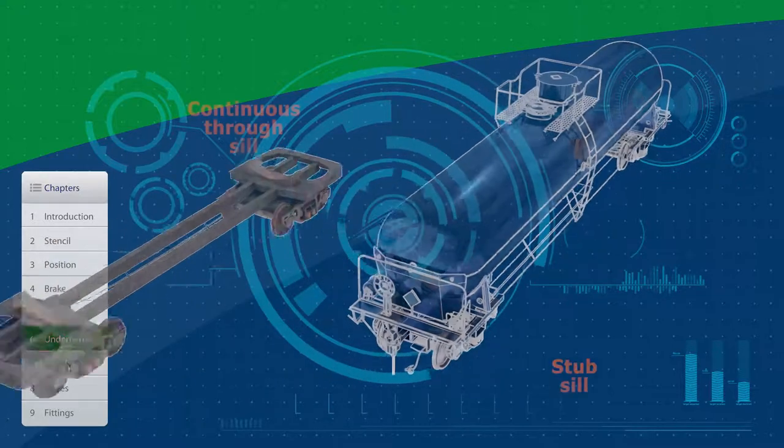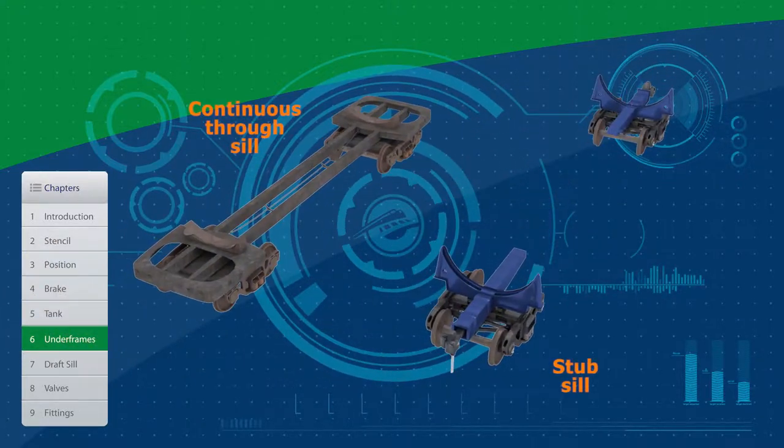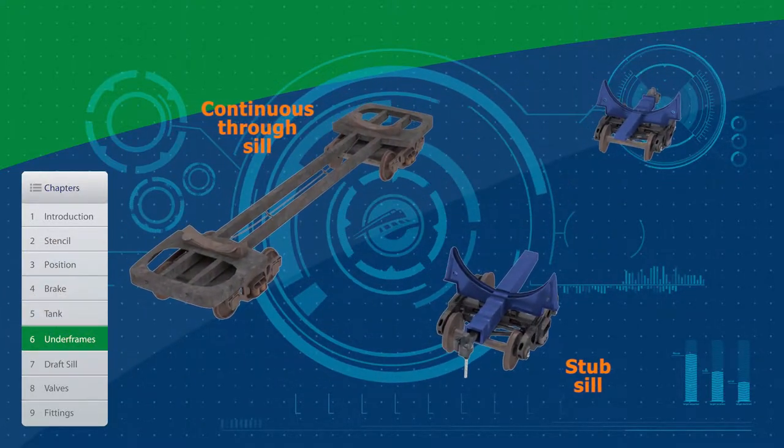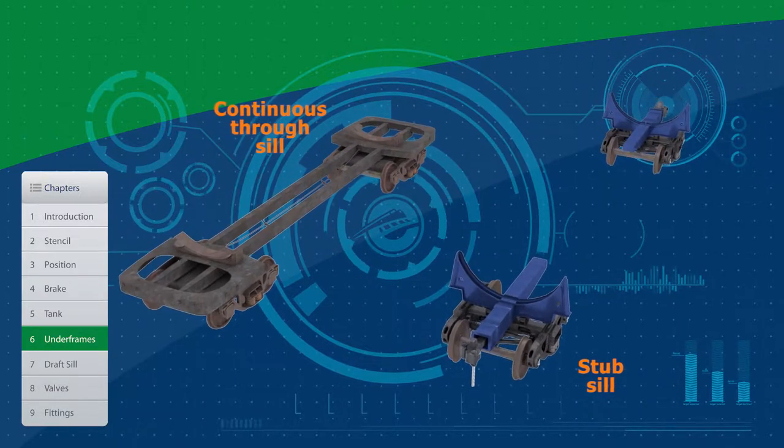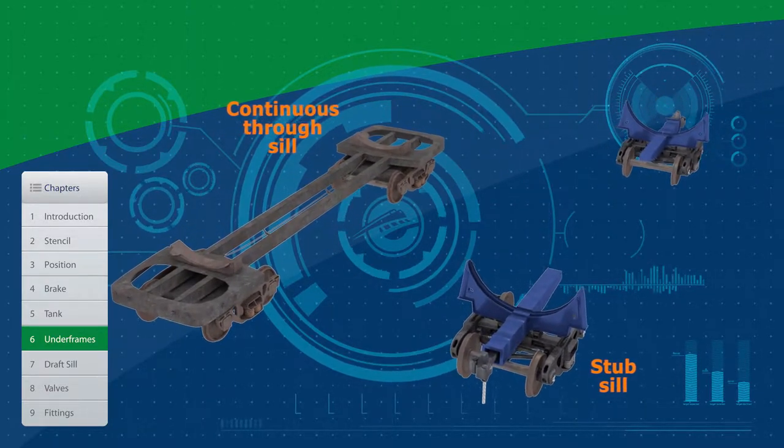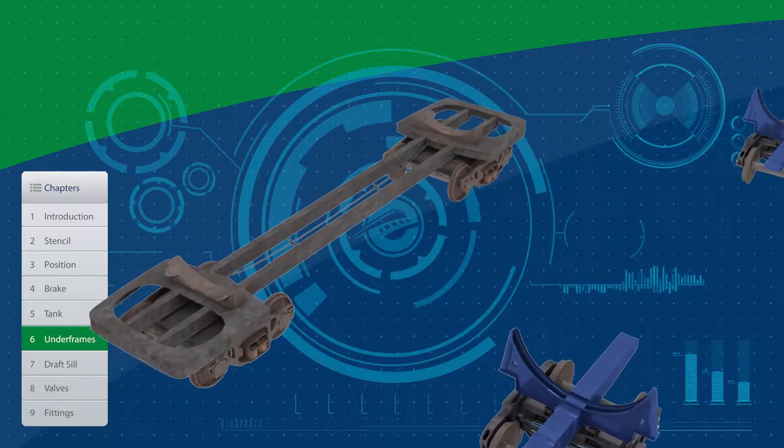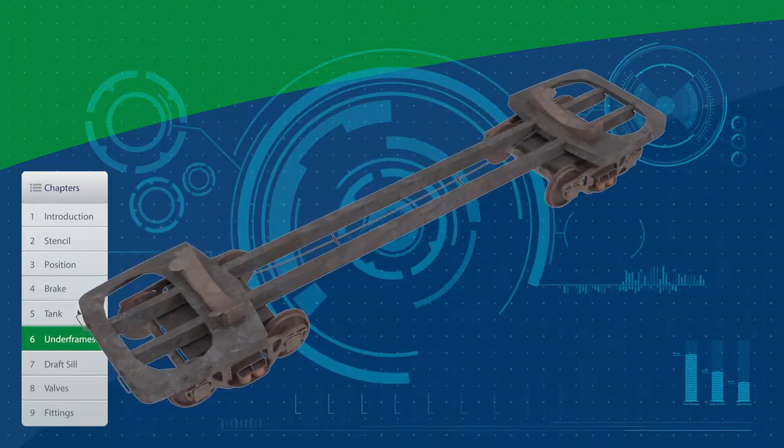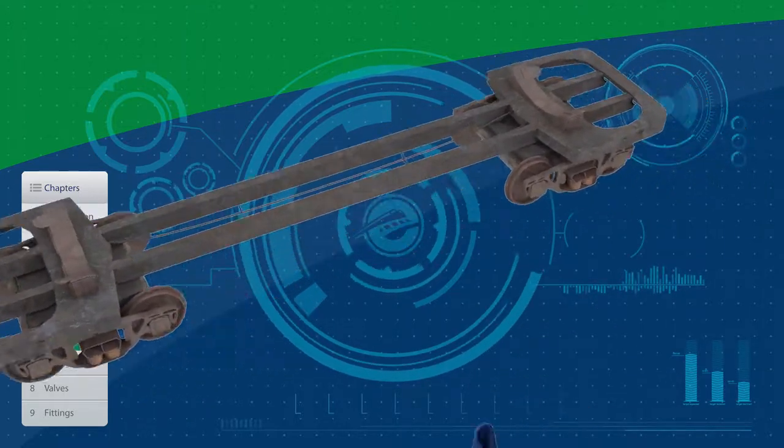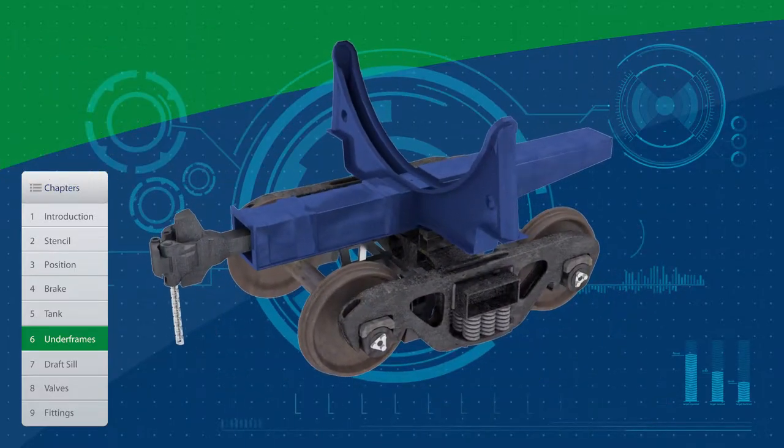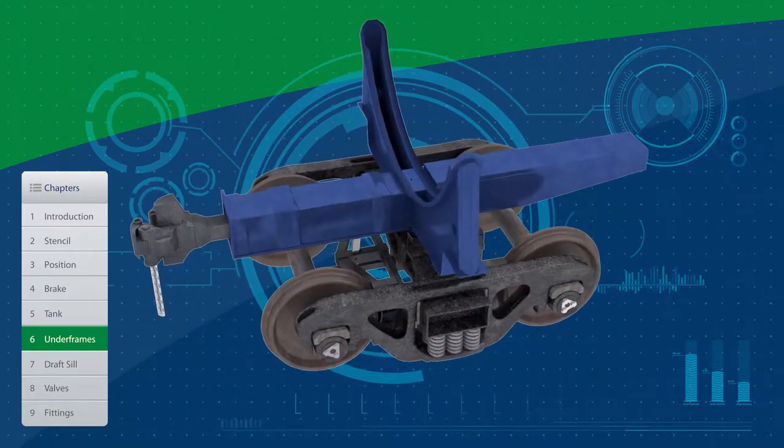There are two types of under frames. The continuous through-sill, common on older tank car types, and the stub-sill, common on modern tank cars. The older continuous through-sill is an uninterrupted bar running from one end of the car to the other. The modern stub-sill has multiple components including the bolsters and the draft-sill.